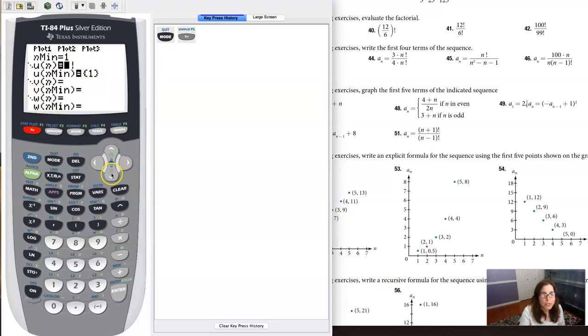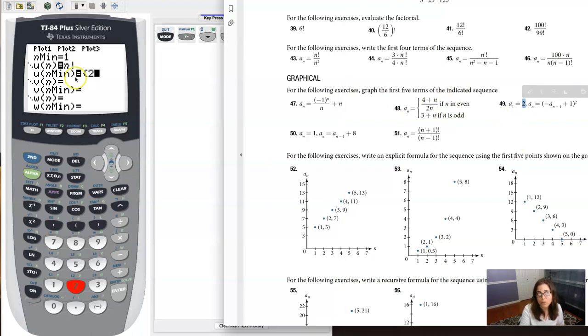The first thing we need to adjust is our starting point. By default, the calculator puts this at 1. We want to put it at 2 because, if we look back, a sub 2 was 2.